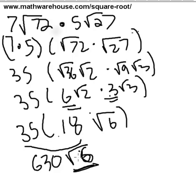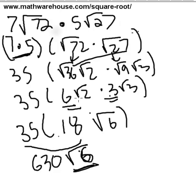Dealing with multiplying radicals really comes down to the two properties we talked about at the beginning: the commutative property, which means since all we're doing is multiplying, we can order things any way we want and group rational numbers with rational numbers and irrational with irrational. The rational numbers are easy — 7 times 5 is 35. For the irrational numbers, simplify each one first, then use the commutative property to multiply rational coefficients and irrational radicals, and just keep repeating this process. If you'd like more practice, visit mathwarehouse.com/square-roots, where there's a square root simplifier that lets you type any number and get its square root in reduced radical form. Thank you.